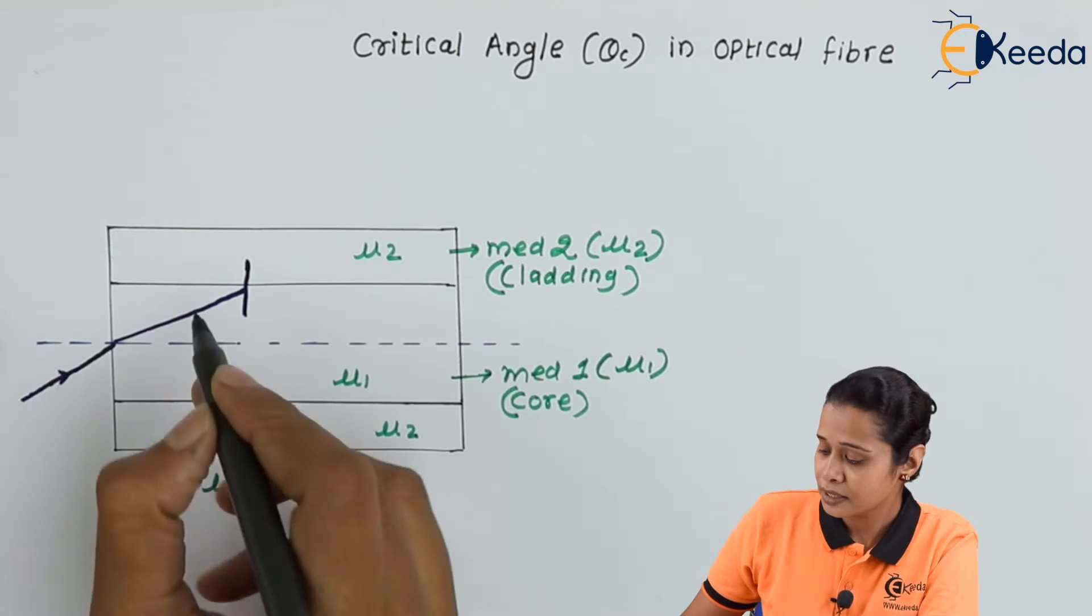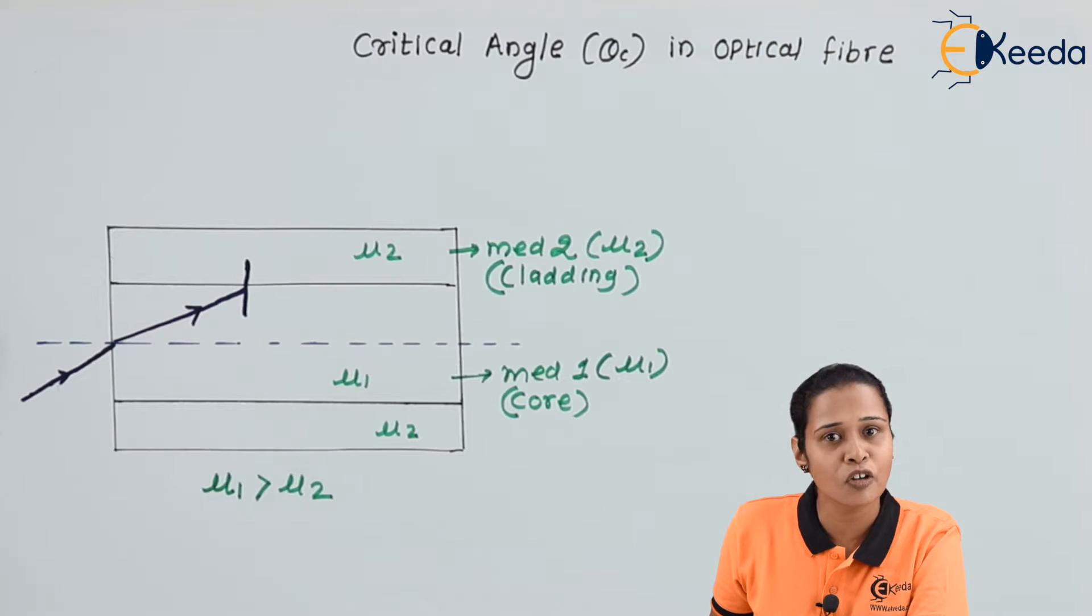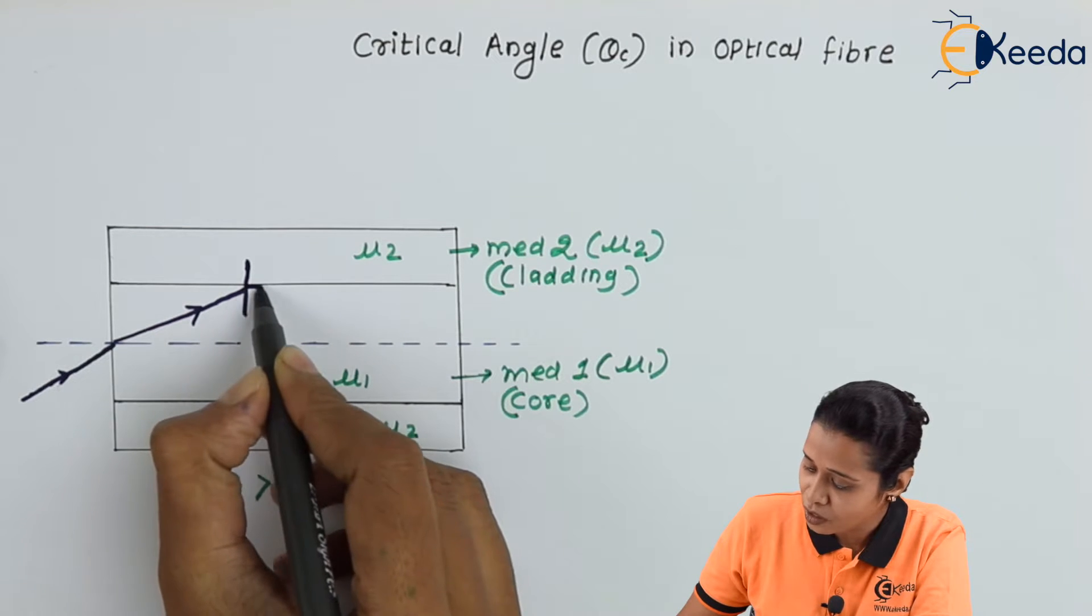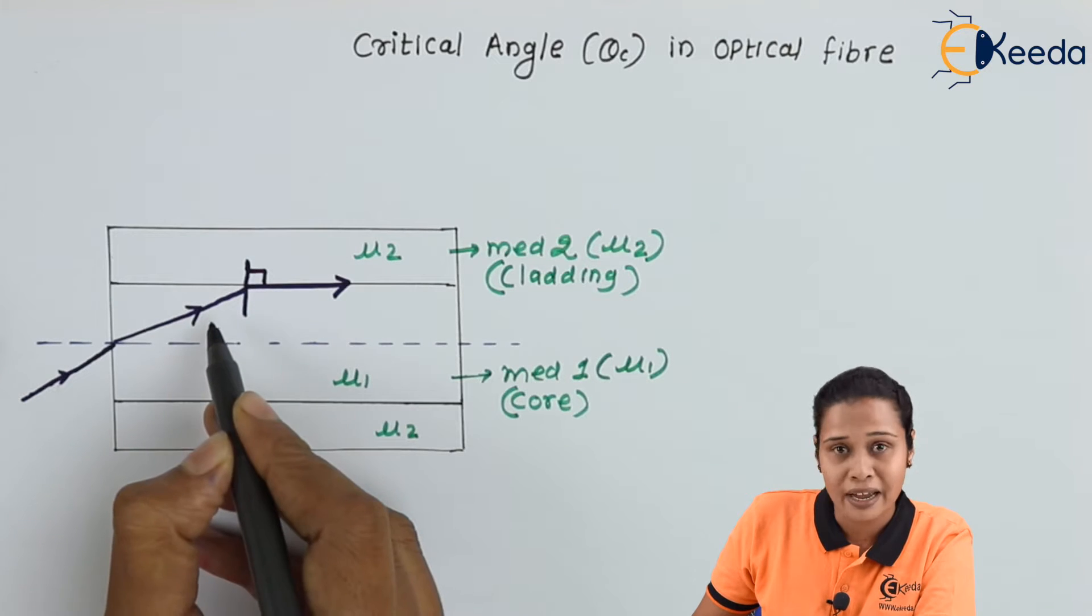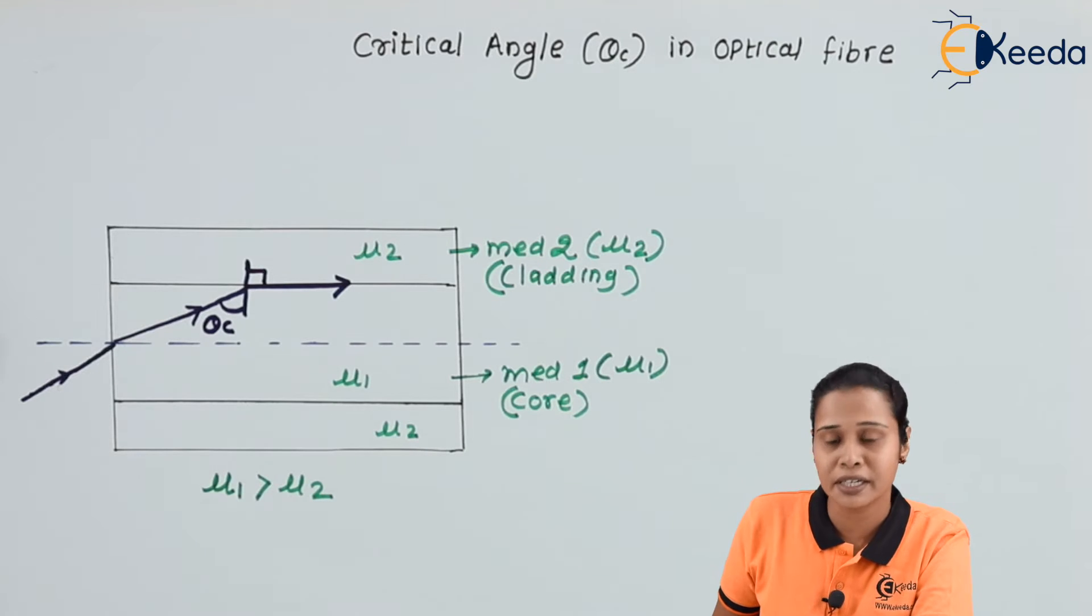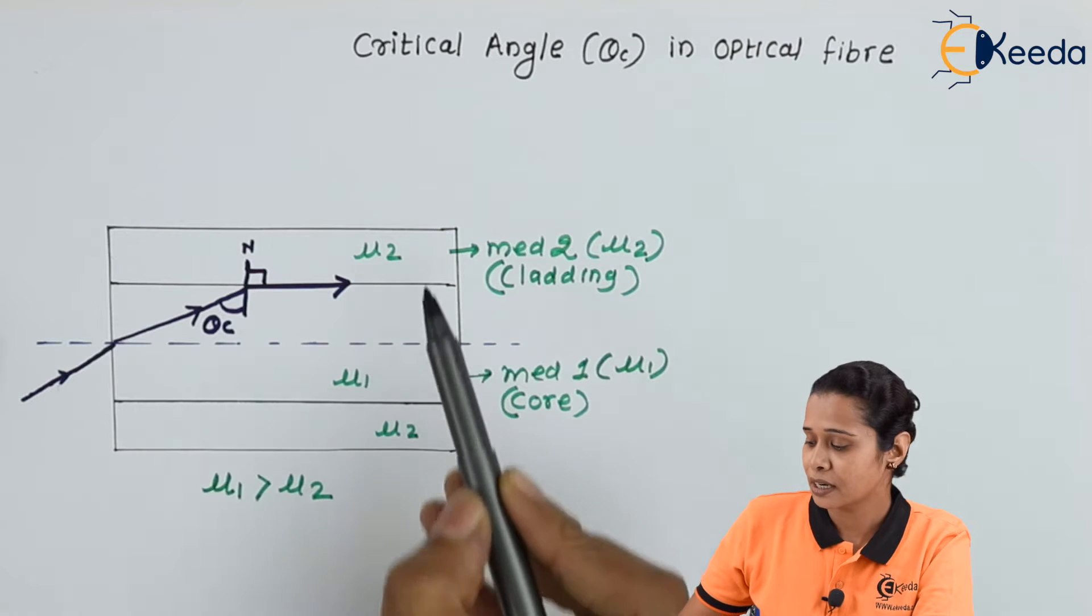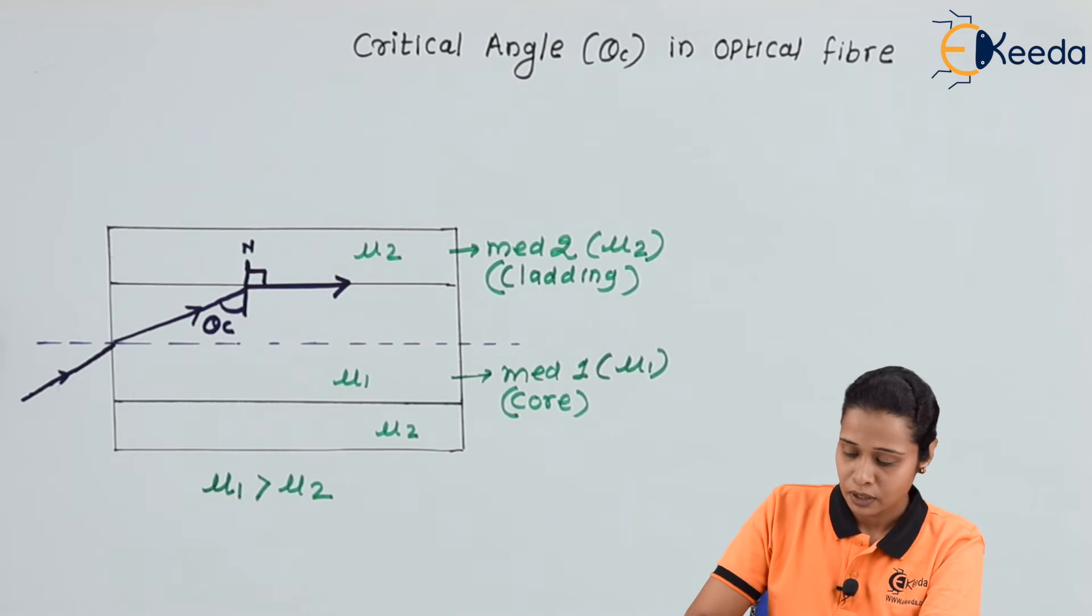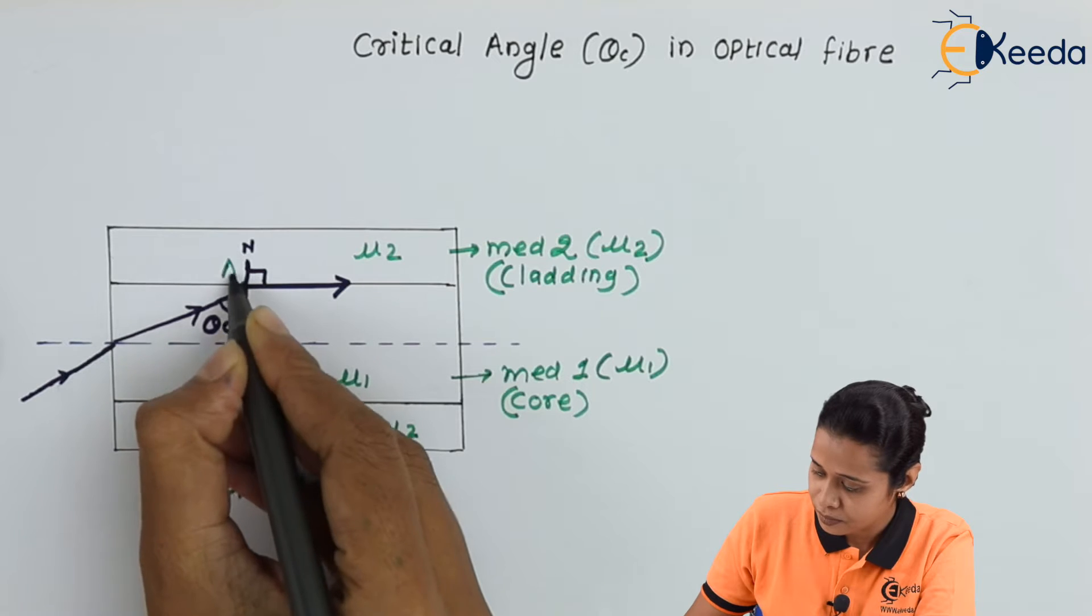Let us consider this incident ray. This is the incident ray such that the angle of refraction for that ray is 90 degrees. So this angle of incidence we can say is θc, which means critical angle, and this is the normal for this two-interface. That is, it is the interface between the cladding and the core. Now, let us say this is point A.